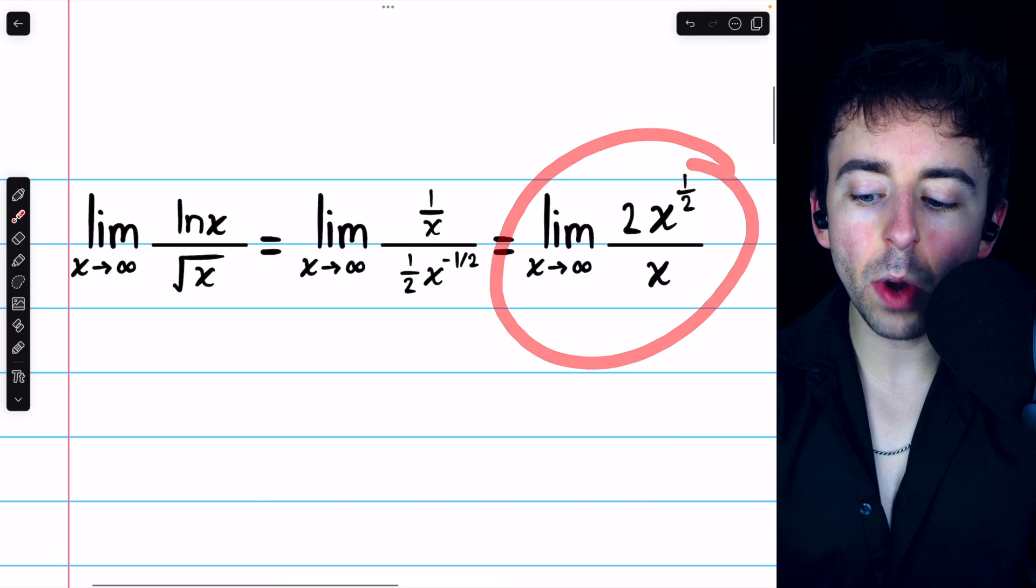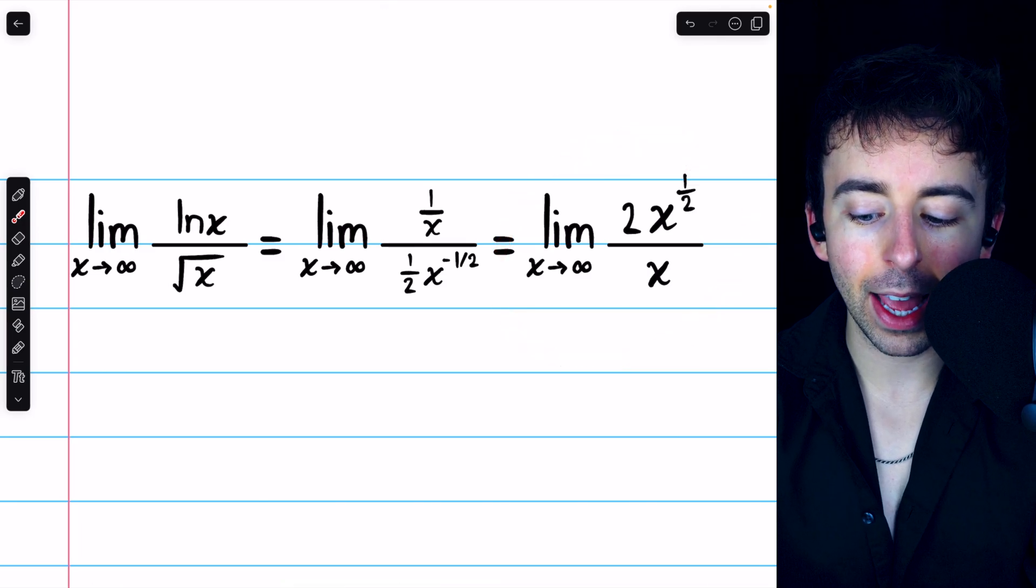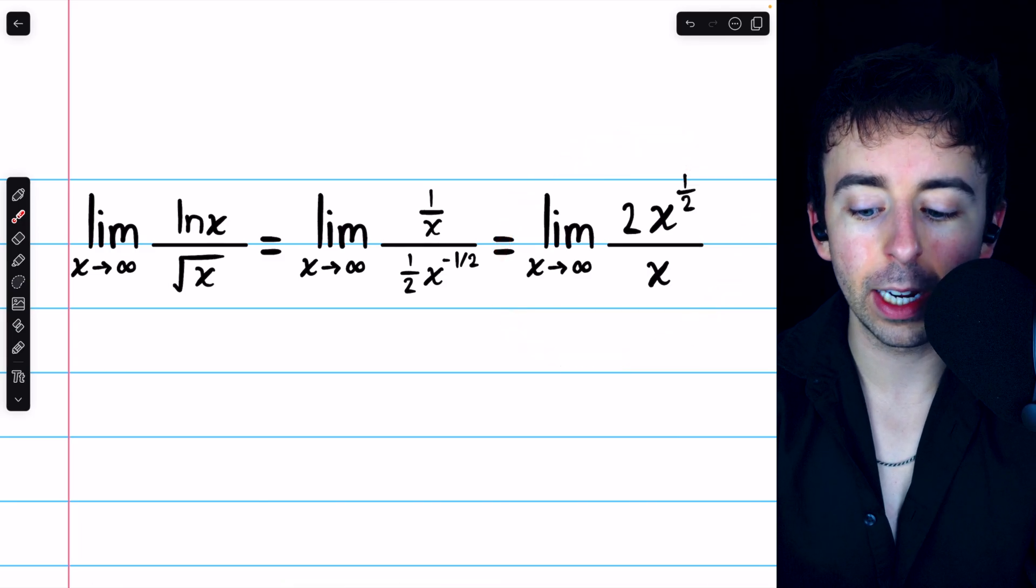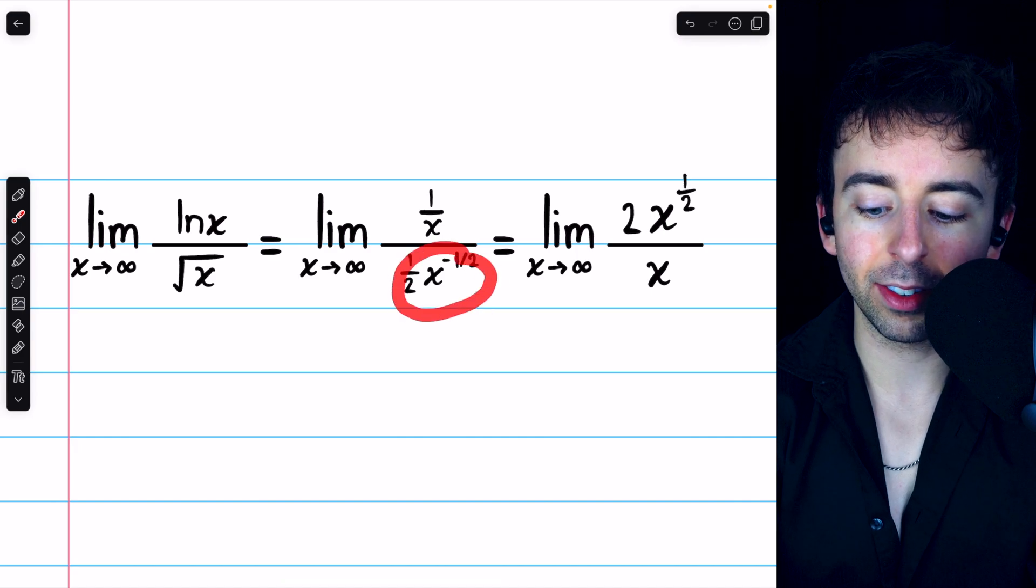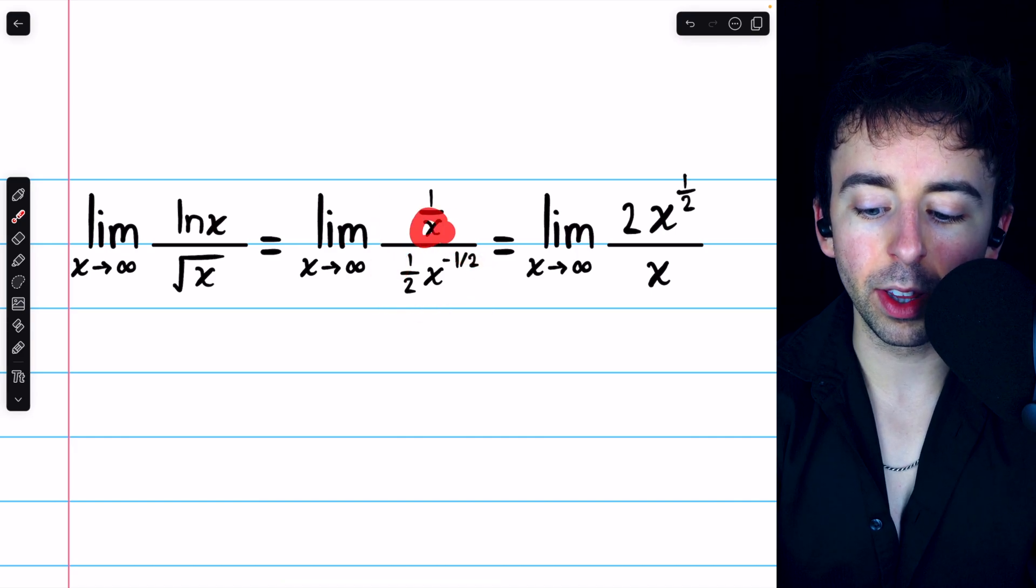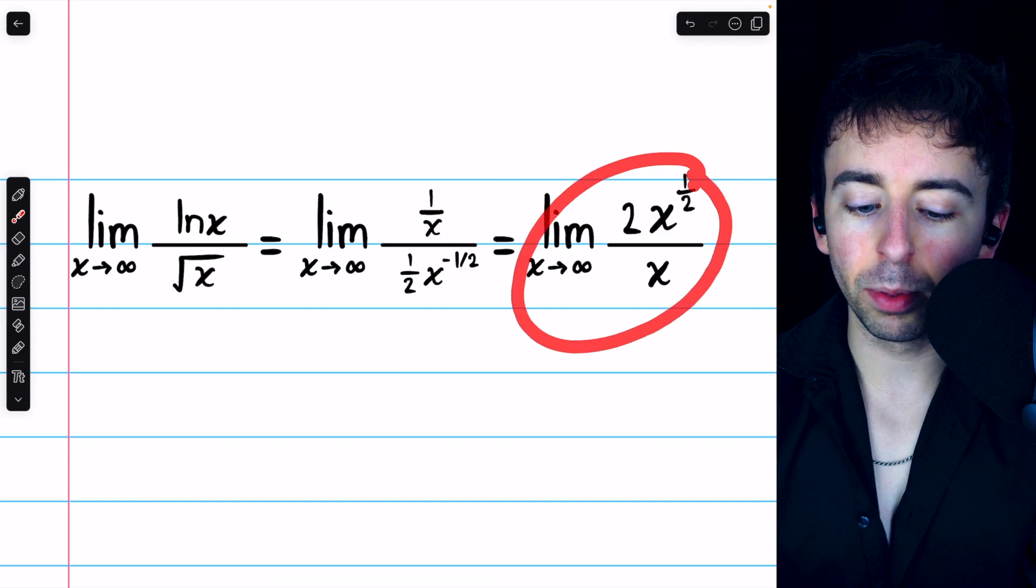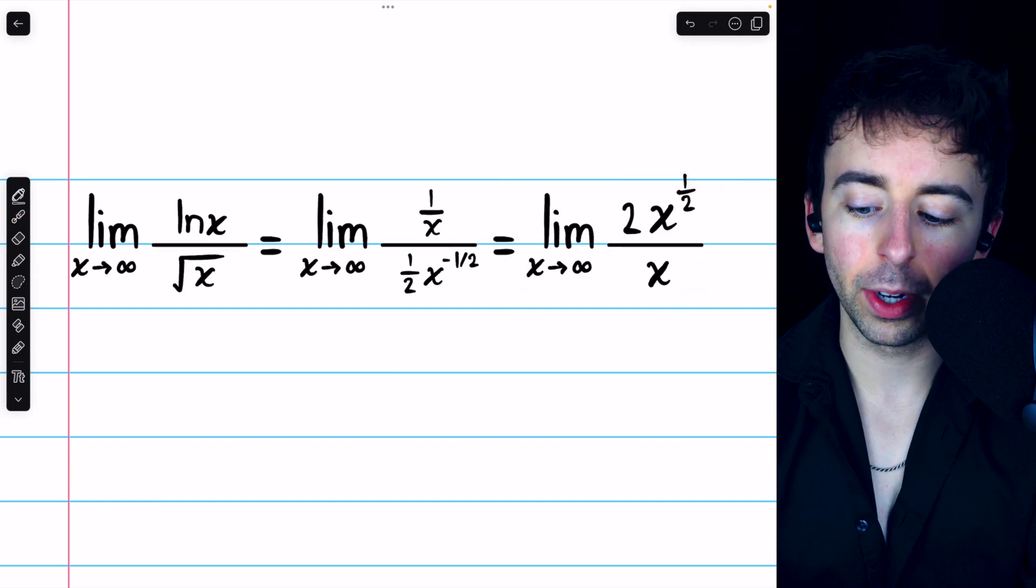Thus, we have the limit of 2 x to the 1 half divided by x as x goes to infinity. Again, we basically moved this stuff up here, and we moved this x down here.